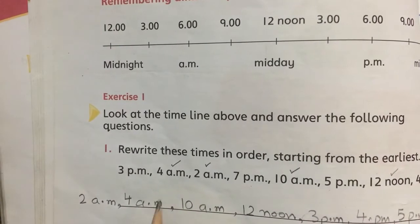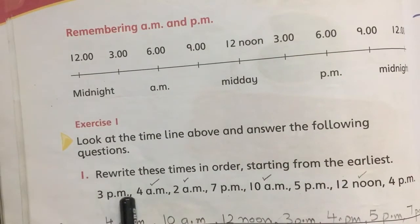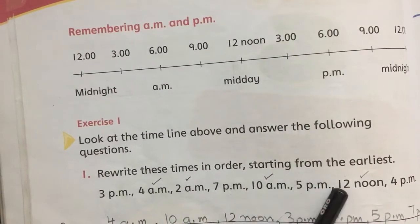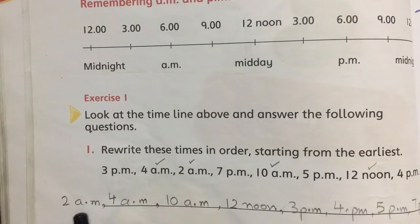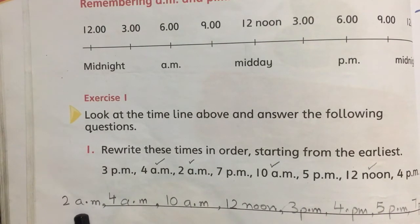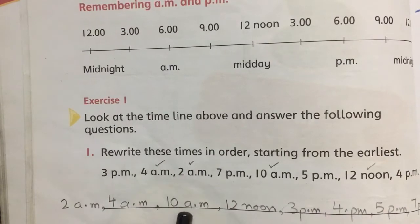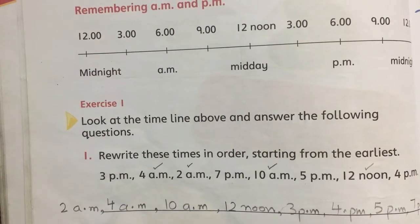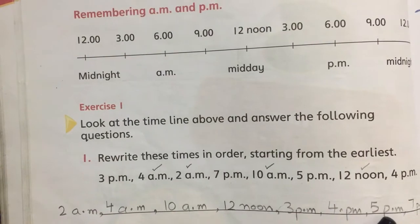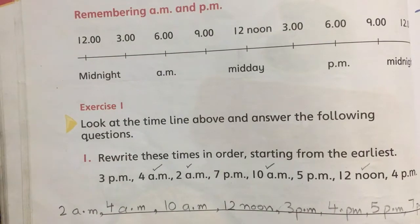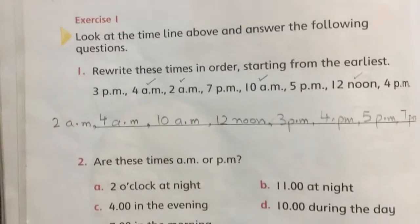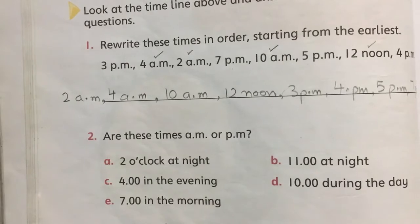So you have to rewrite these times starting from the earliest. سب سے پہلے 2 AM لکھا جو رات دو بجے سے start ہوتا ہے — midnight سے noon تک جو time ہوتے ہیں وہاں سے start کریں: 2 AM, then 4 AM, 10 AM, 12 noon, then 3 PM, 4 PM, 5 PM, and 7 PM.